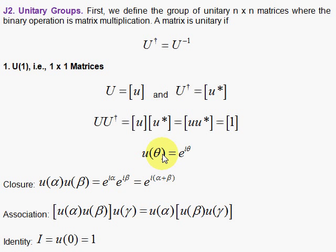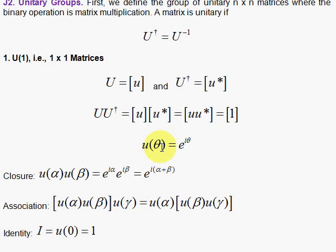In that case, we can parametrize the elements by U of theta where we have e to the i theta. There's no need to put the brackets here, it's only just one element in the matrix. Closure applies because if we take two of these and multiply them together, by adding alpha plus beta you get another angle, and therefore this element is in the group also. Association works because multiplication is associative. Identity works here because we have an identity element where the angle theta is zero, e to the zeroth power is one.